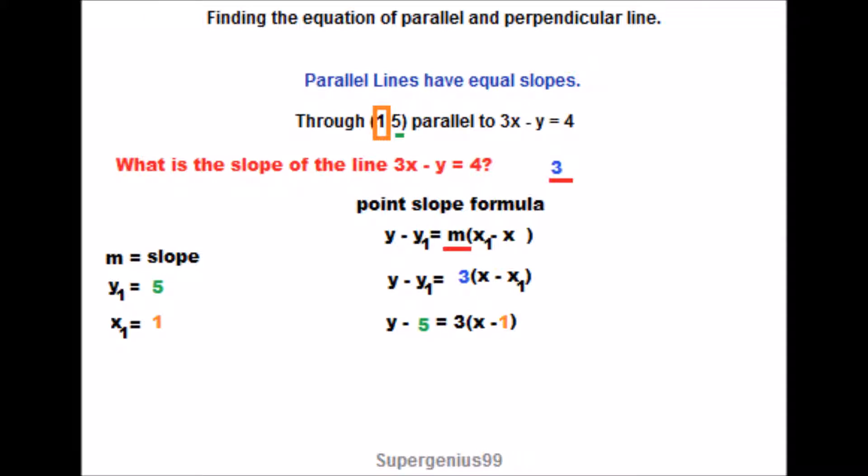So let's simplify, let's get y by itself in this problem. So the first thing we'll do is we'll distribute the 3 on the right-hand side. So when we distribute 3, that means multiply everything by 3. So then 3 times x is just 3x. And 3 times that 1 is just 3. So it's minus 3.